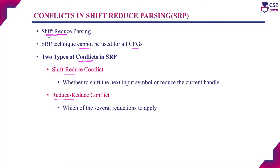Throughout the implementation of the shift-reduce parsing technique, the parser implements only two operations: shift and reduce. During its implementation, the parser may reach a condition where it must decide whether to shift the next input symbol into the top of the stack or to reduce the current handle on the top of the stack. When the parser gets confused and reaches this condition, the conflict is called shift-reduce conflict.